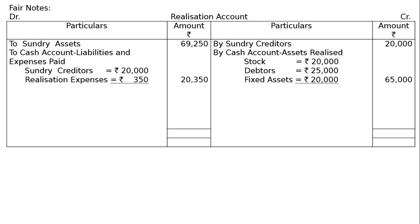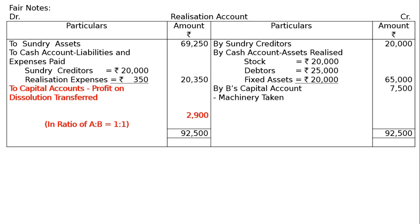B took the machine at an agreed valuation of Rs. 7,500 — by B's capital account, machinery taken Rs. 7,500. Then we total the credit side, which comes to Rs. 92,500. Taking it to the debit side, since the credit side is higher than the debit side, we will be getting a profit. The difference is Rs. 2,900, transferred to capital accounts as profit on realization in the ratio of A to B equal to 1 to 1.